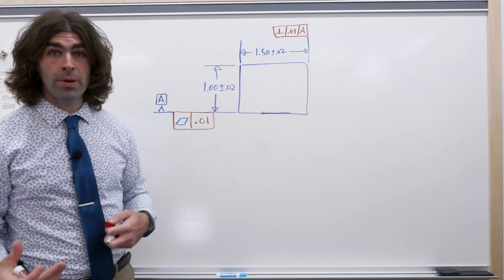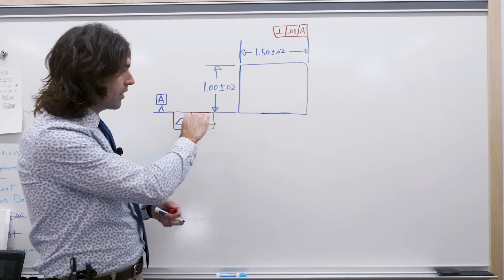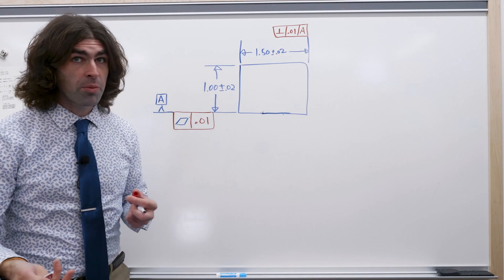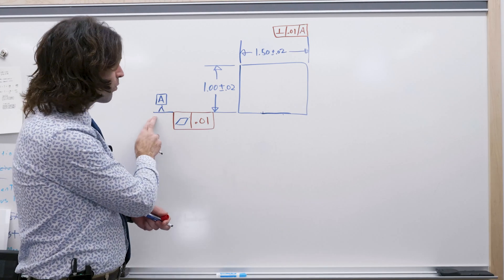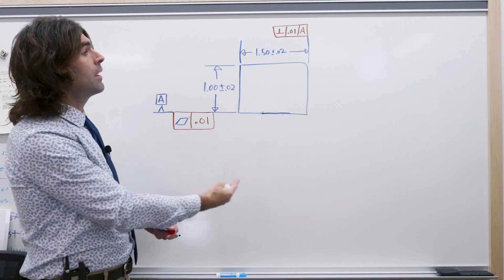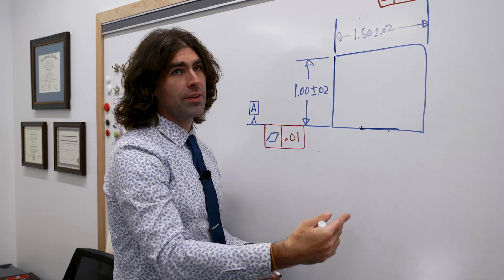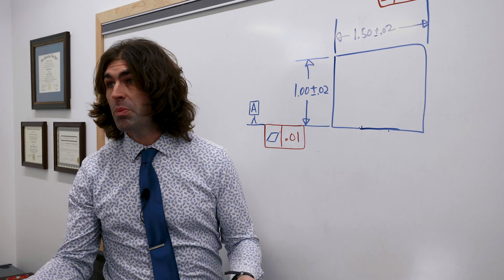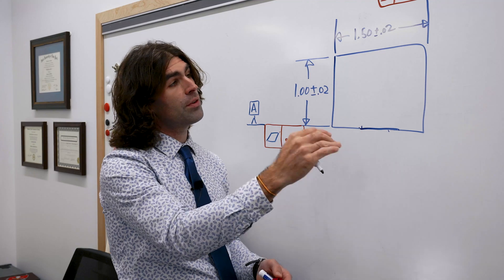So this is a common setup for rectangular parts. We've got a flatness on the primary, the most important surface. We've identified it as a datum feature with our datum feature symbol, and we're going to take another surface and identify it as perpendicular to this surface.